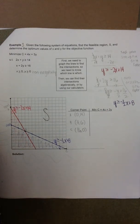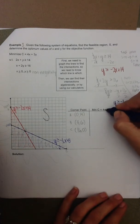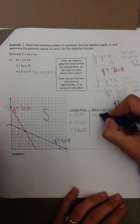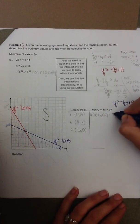Now, as we saw in previous examples, we plug in the x and y coordinates of the corner points into the objective function to find which optimizes the solution. So replacing x and y with 0 and 14, we have 4 times 0 plus 3 times 14. That should give me 42.